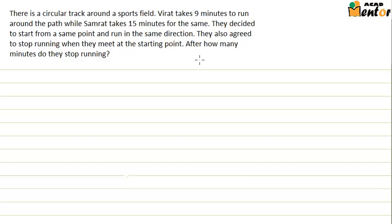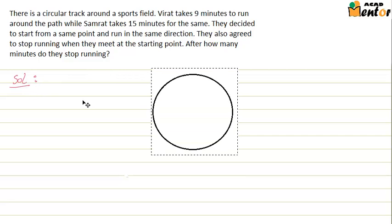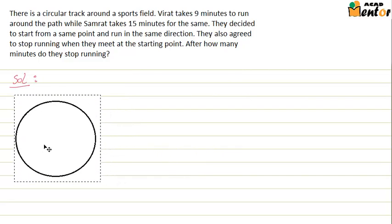They also agreed to stop running when they meet at the starting point. We have to find out after how many minutes will they stop running. So let's see how we will be solving it. Suppose this is our circular track and this is their starting point. Let's call it A. The first time Virat will come back to point A after 9 minutes and the second time he will come back after 18 minutes.